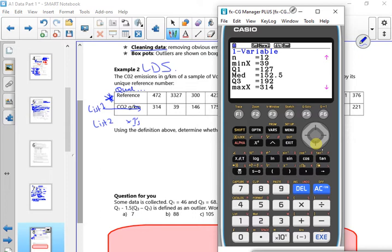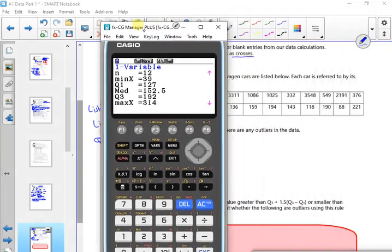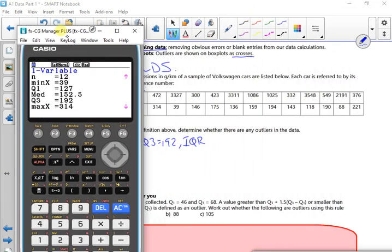Right, so what have we got then? So Q1 is 127. Q3 is 192. So my interquartile range is 192 minus 127. And I'll probably leave it over there. Oh, I'm just going to do it full. Go over it. What's that going to be then? 65 I guess. Probably get that wrong because I'm tired. Hopefully, yeah, 65 sounds good.